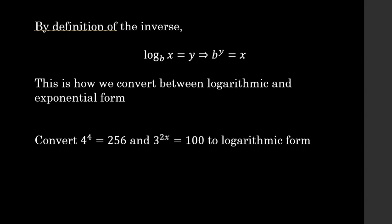Let's look at a couple of samples. Convert 4 to the 4th equals 256 into logarithmic form. The 4 here is your base, so this base becomes the base of your log. Then the other two quantities switch sides of the equal sign: the 256 goes inside of our log, and the 4 that was the exponent goes on the right-hand side.